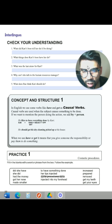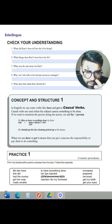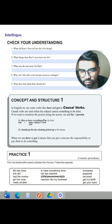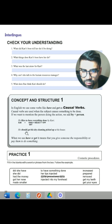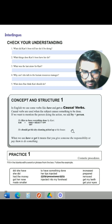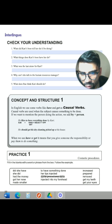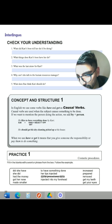Subject plus 'have' plus object plus verb in past participle, plus 'by Cari.' We have 'have' and 'get.' He likes to have everything done by Cari, or he likes to get everything done by Cari. He should get his dry cleaning picked up at his house. When we use 'have' or 'get,' it means that you give someone the responsibility or pay them to do something.